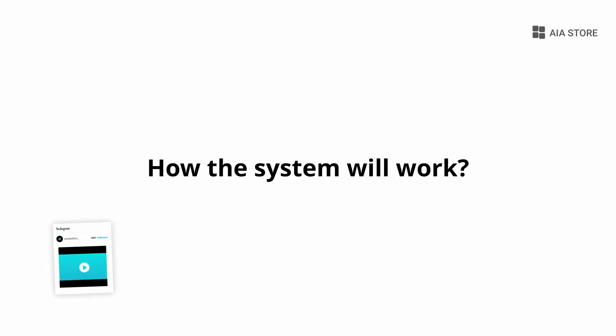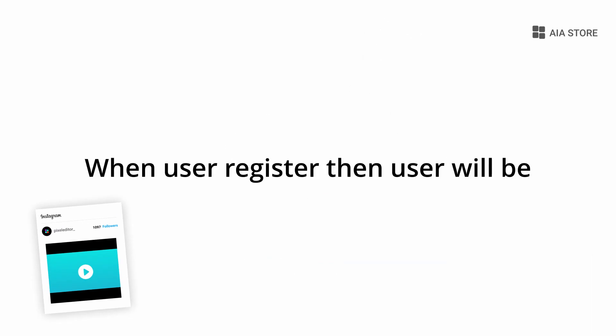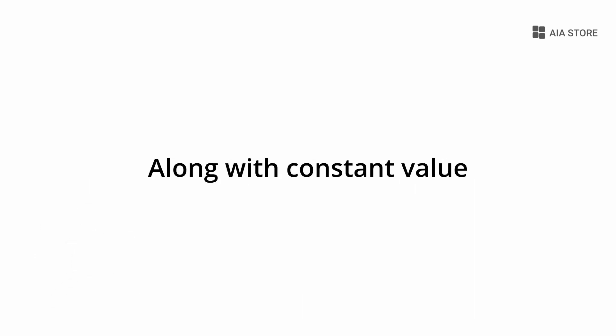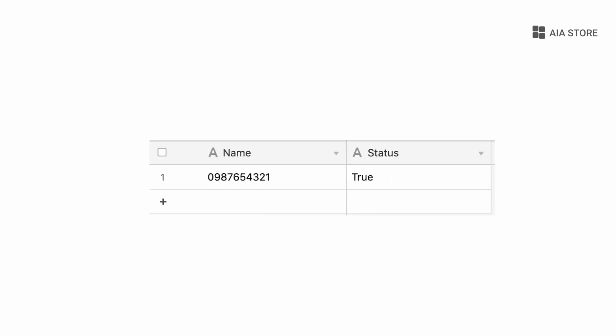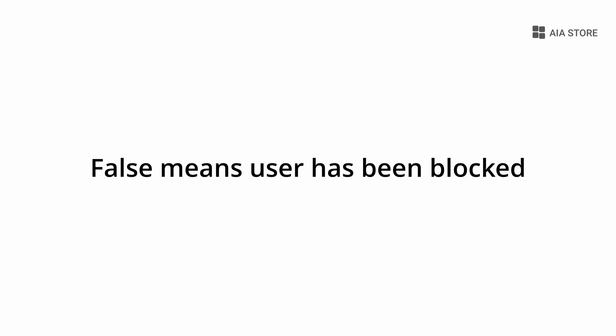How the system will work — the idea is we will store the user inside the database. When a user registers, we will store all their input along with one constant value that is status. We will keep that status value as true by default. If status is true, that means the user is not banned from the app. And if you switch it to false, that means you have blocked that particular user from the app.